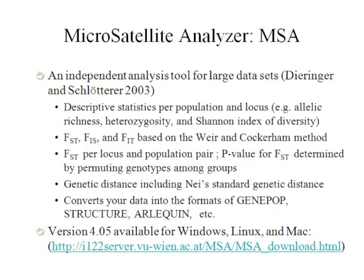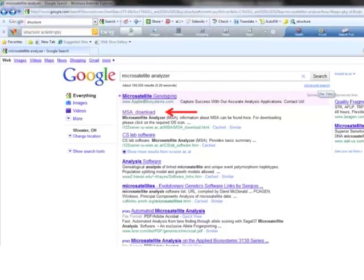You can use this program to convert your data for other genetic analysis programs like GenePop, Structure, and Arlequin. Currently, version 4.5 is available for Windows, Linux, and Mac. You can download this program from the provided URL, or simply go to Google and type 'microsatellite analyzer' in the search bar, then you can find the MSA download.